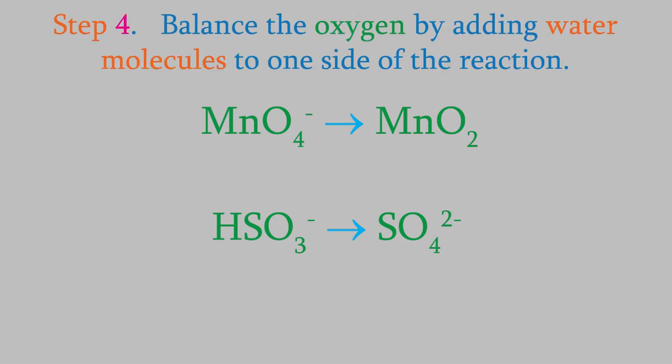Step 4 tells us to balance the oxygen atoms in each reaction by adding water molecules to one side. In the reduction reaction, there are 4 oxygens on the left and 2 on the right, so we'll add 2 water molecules on the right to balance them out. In the oxidation reaction, there are 3 oxygens on the left and 4 on the right, so we need to add 1 water molecule on the left side. Now that we've done that, the oxygens are balanced in each reaction.